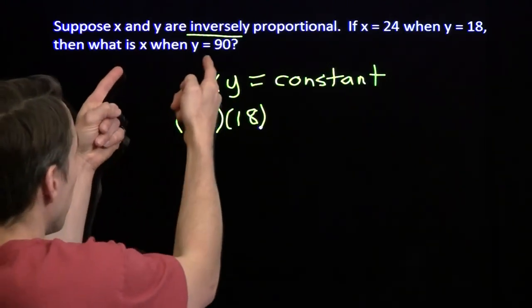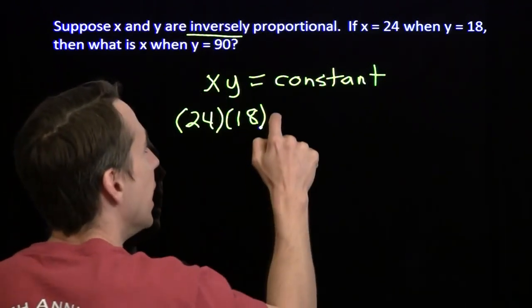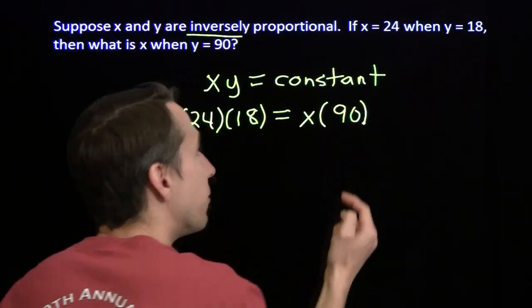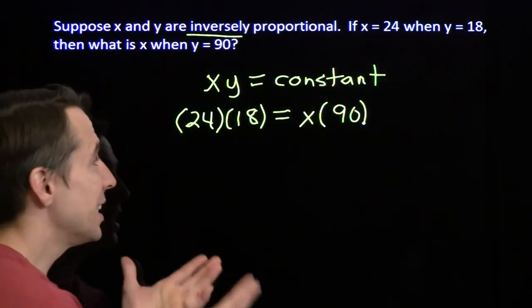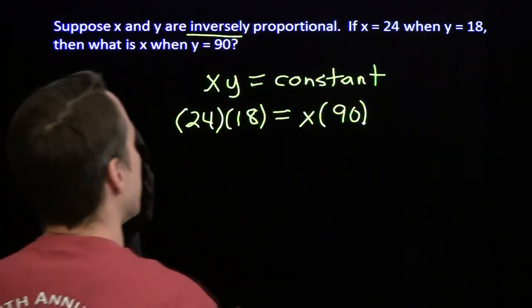What we're trying to find is x when y is 90. We know that the product of this x and 90 has to be the same thing as the first product we got when x was 24 and y was 18. That's what inverse proportion means.